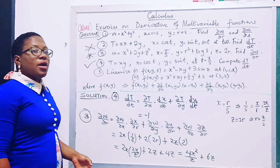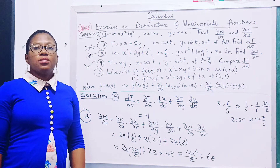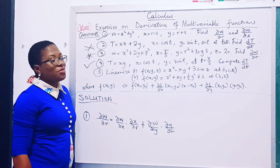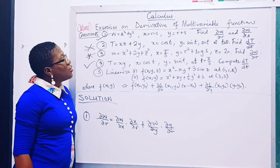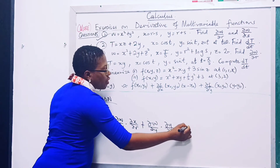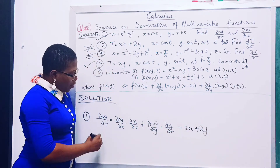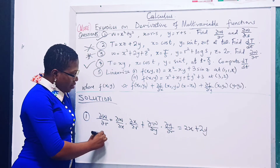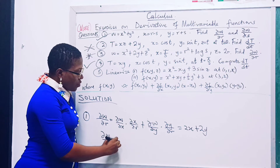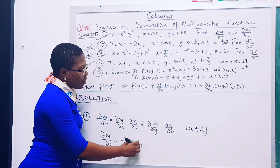Try problem number one on your own. Your answer for partial w/partial r should be 2x + 2y, and for partial w/partial s it should be minus 2x + 2y.